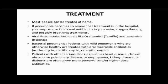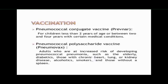Most people can be treated at home. Patients with serious conditions such as heart disease, chronic pulmonary disease, or kidney disease are given more powerful, high-dose antibiotics. For viral pneumonia, antivirals are given; for fungal pneumonia, antifungal drugs are used. Coming to vaccination, there are two kinds of vaccines: PPV (pneumococcal polysaccharide vaccine), given to all adults, and PCV (pneumococcal conjugate vaccine), which is highly immunogenic in infants and young children.